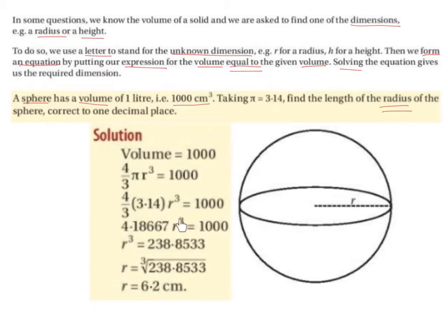To get the r cubed on its own, we're going to have to divide across by 4.18667. So a thousand divided by 4.18667 is going to be 238.8533.